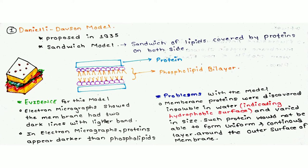The second model that replaced Grendel and Gotter's model was the Danielli-Davson model, proposed in 1935 by James Danielli and H. Davson. It was also called the sandwich or trilaminar model. According to this model, two lipid layers are sandwiched between a continuous layer of protein, as you can see in the diagram.